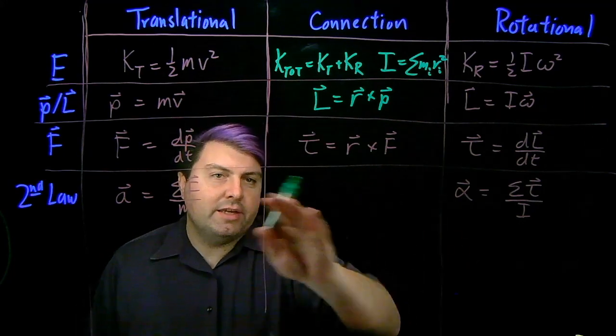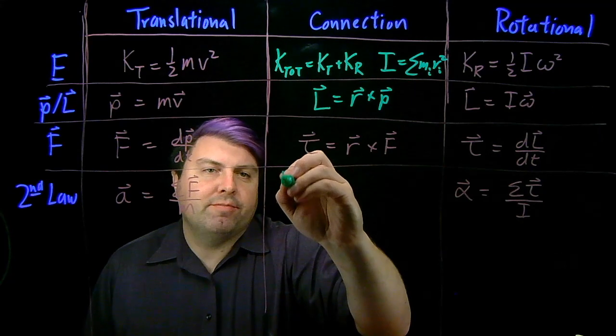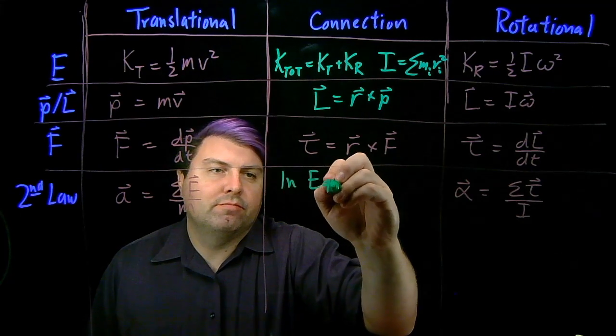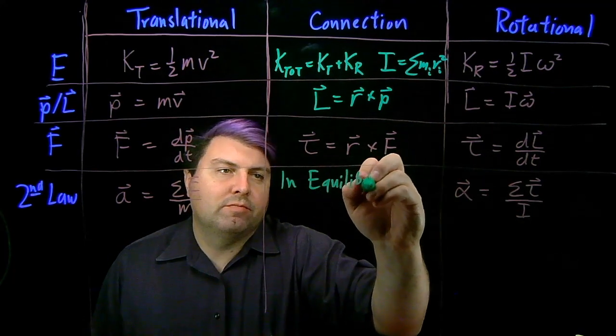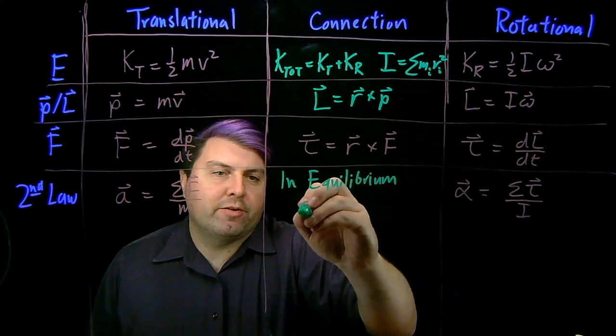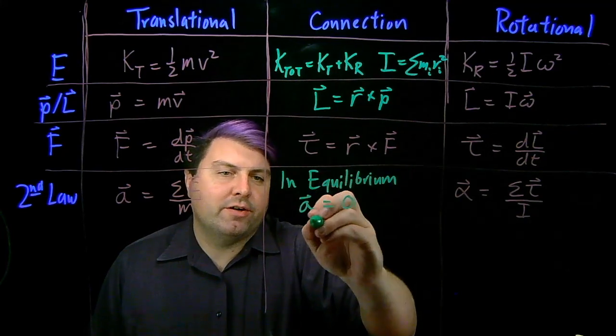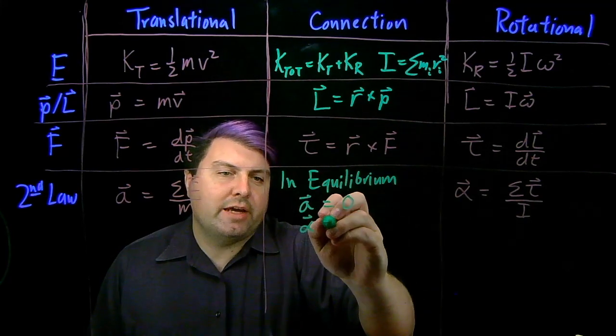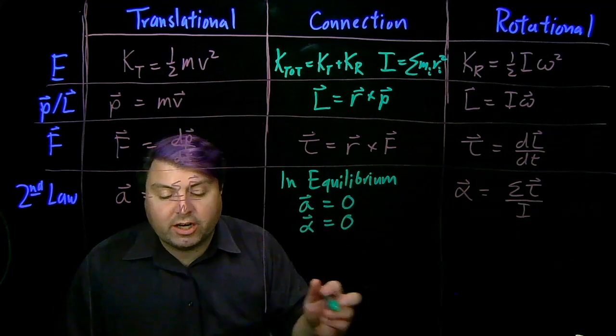Well, one thing is that if we're in equilibrium, our object can neither move, acceleration is zero, and it can't rotate, alpha is zero, or it can't change its rotation.